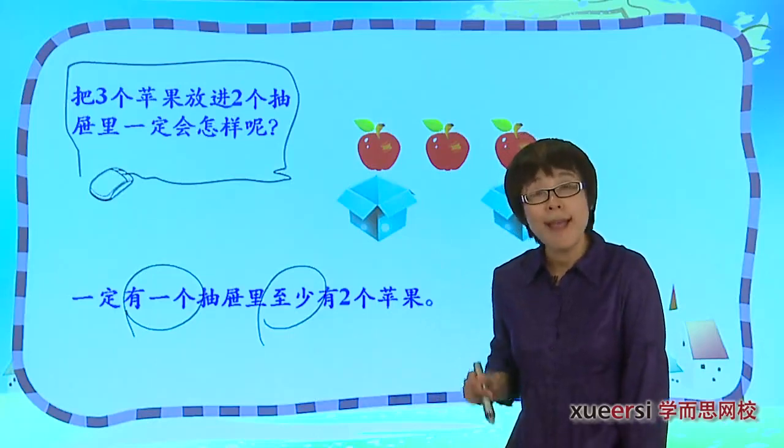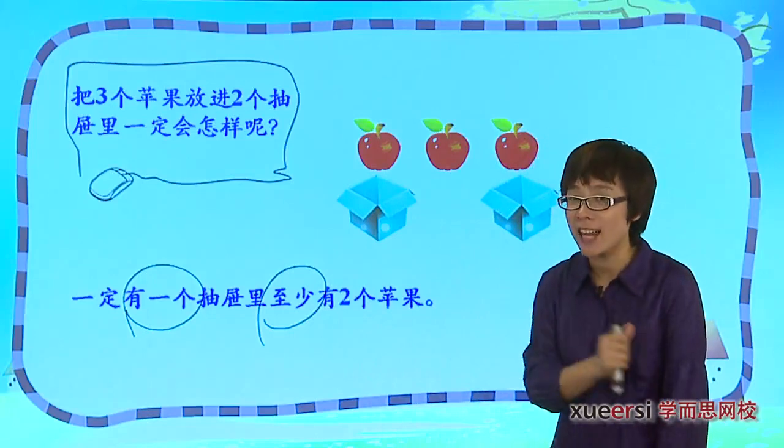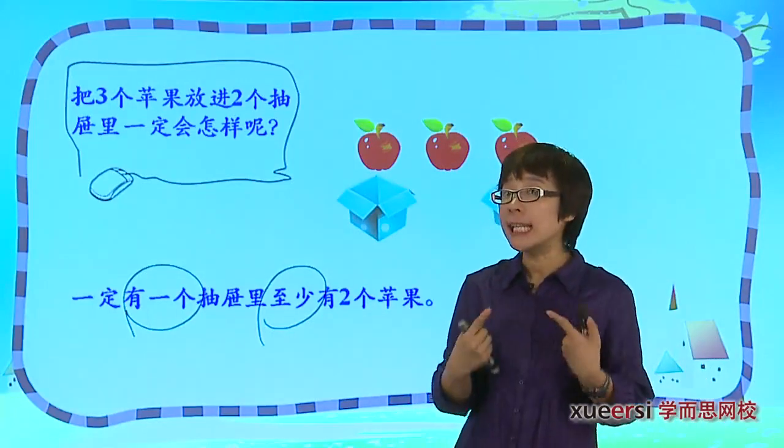这一个抽屉里头至少有两个苹果，是不是也有可能出现这一个抽屉里有三个苹果的情况？但是它最少最少也不会比两个还少了。